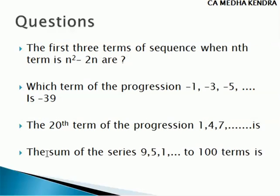The fourth question: find the sum of the series 9, 5, 1, etc. up to 100 terms. We have N equal to 100 and A equal to 9. Looking at this, it has a common difference of minus 4, so it is arithmetic progression. We use the formula SN equal to N divided by 2 into (2A plus (N minus 1) into D).